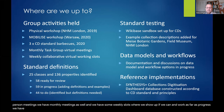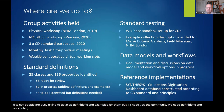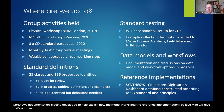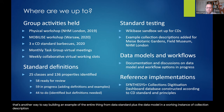As far as progress: we have 25 classes and 136 properties identified. Of all of those, 58 are ready for your review, 59 are in progress with people developing definitions and examples, but 44 need you — the community — for definitions and vocabularies. Standard testing is ongoing, and Matt, Martin, and Sharon Grant will talk more about that. The data models and workflows documentation is being developed, and the reference implementation — building an example of the entire thing from data standard plus data model in a working instance of a collection description dashboard showing all collections across 122 museums.